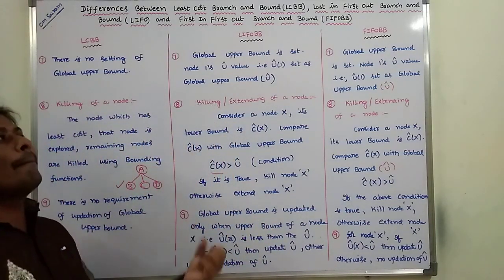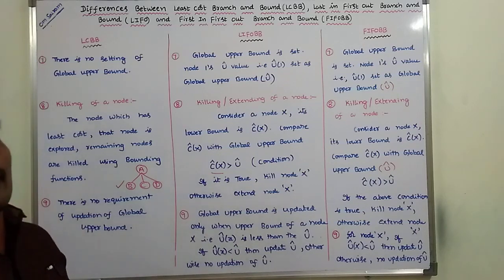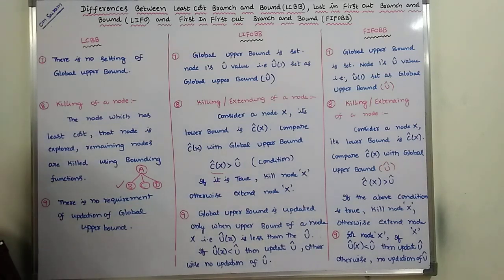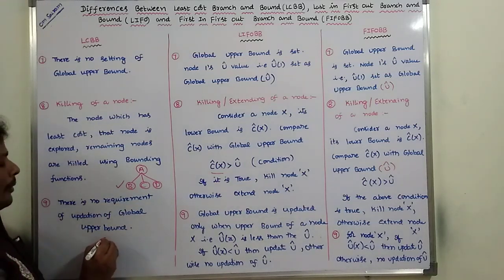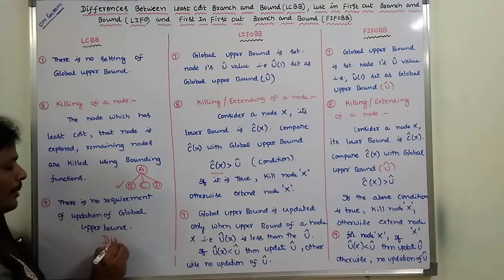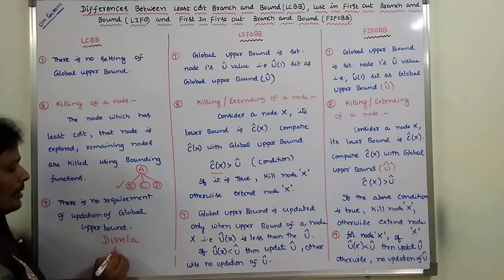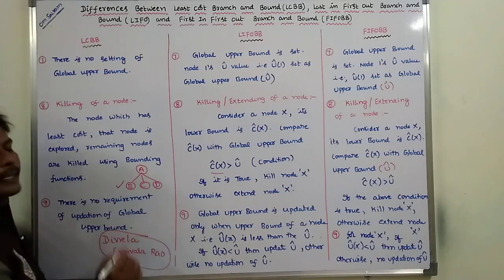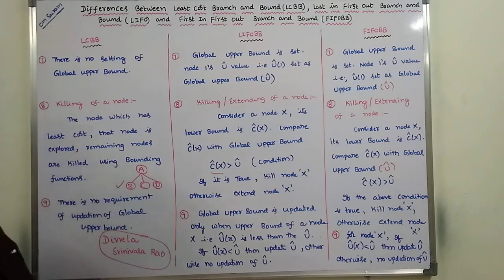These are the main differences between LIFO branch and bound, FIFO branch and bound, and least cost branch and bound. Thank you for watching this video. If you like this video, please subscribe to my channel Divvela Srinivasarava, and share this video with your friends and classmates. Thank you.